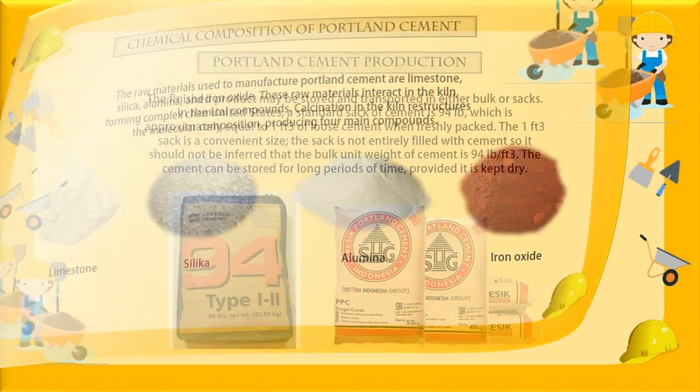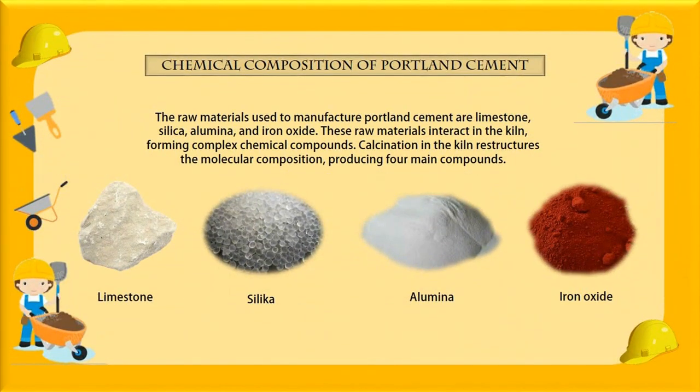Next, the chemical composition of Portland cement. The raw materials used to manufacture Portland cement are lime, silica, alumina, and iron oxide. These raw materials interact in the kiln, forming complex chemical compounds. Calcination in the kiln restructures the molecular composition, producing four main compounds, as shown in table 6.1.